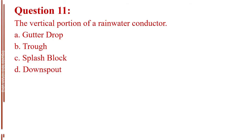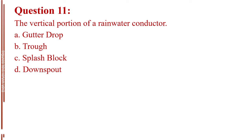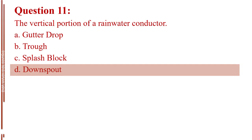Question number 11. The vertical portion of a rainwater conductor. Letter A, gutter drop. Letter B, trough. Letter C, splash block. Letter D, downspout. The answer is Letter D, downspout.